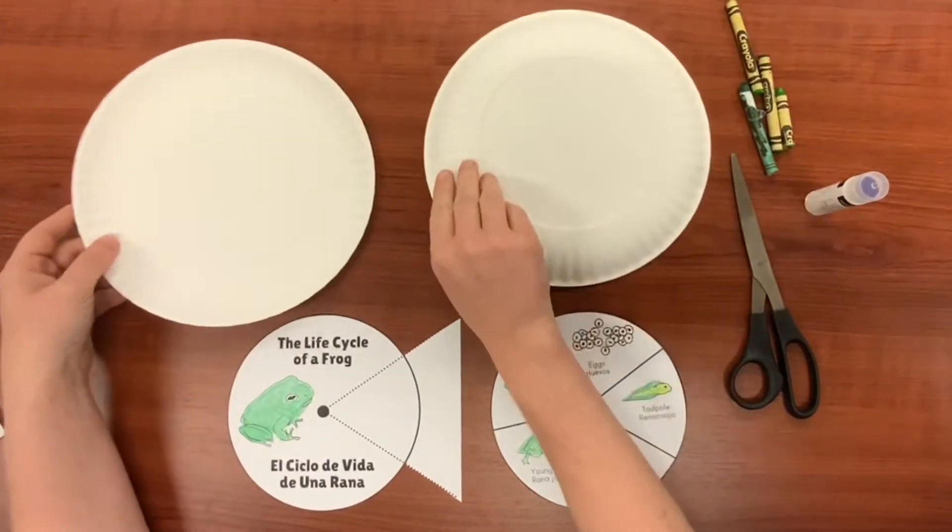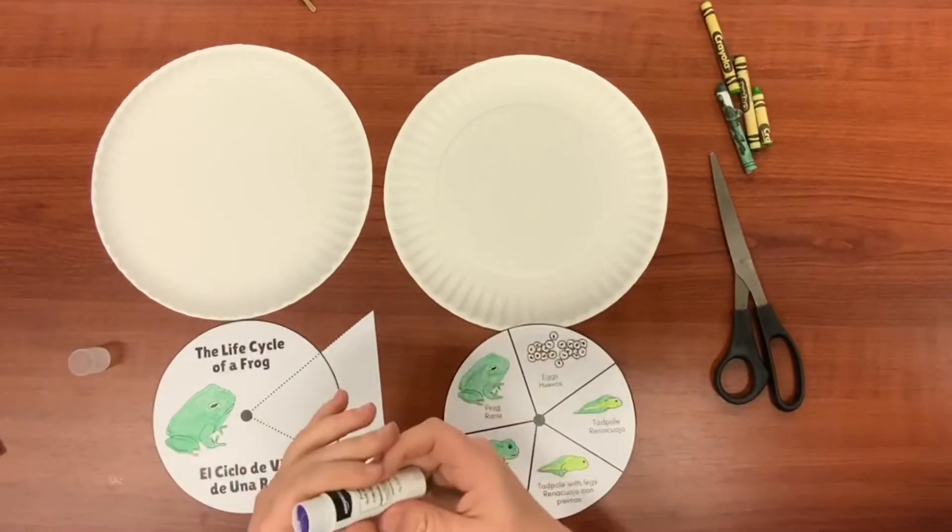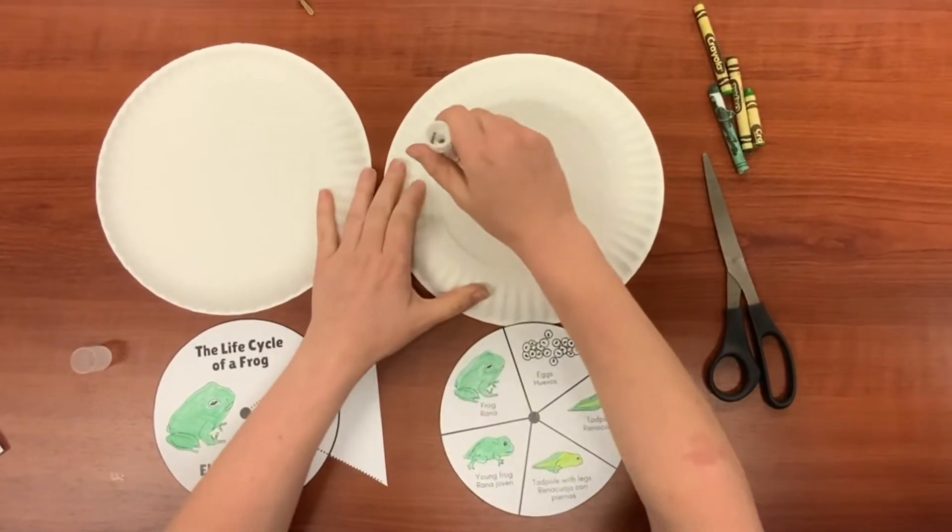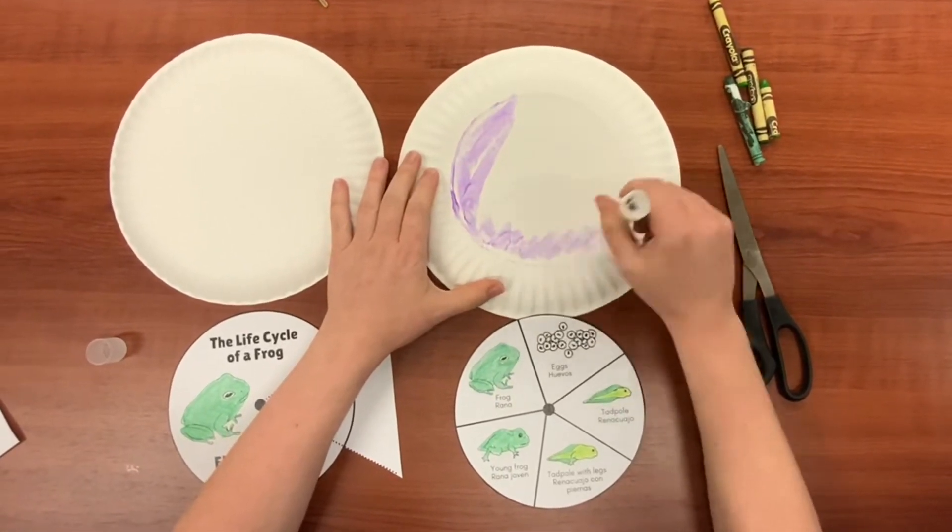Now turn both paper plates over so they are face down. And we're going to take our glue stick and glue one sheet to the center of each of the plates.